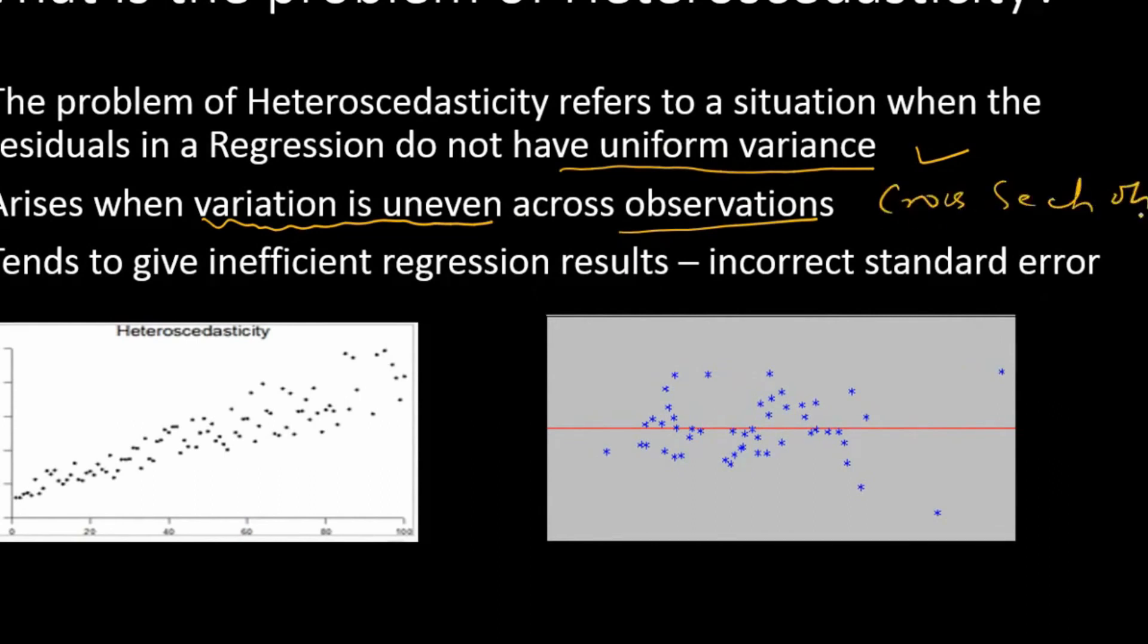I'll explain what uneven variation across observations means. It's mostly seen in cross-section data where the variation changes with respect to the observations. Here is an example: you can see the variation is much less in the initial period and later the variation is much more—that's a typical case of heteroscedasticity.